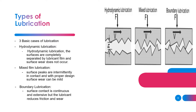There are three types of lubrication: hydrodynamic lubrication, mixed lubrication, and boundary lubrication. For hydrodynamic lubrication, the surfaces are completely separated by a lubricant film and surface wear does not occur. In mixed lubrication, surface peaks are intimately in contact, but with proper design surface wear can be mild. In boundary lubrication, surface contact is continuous and extensive, but the lubrication reduces friction and wear.